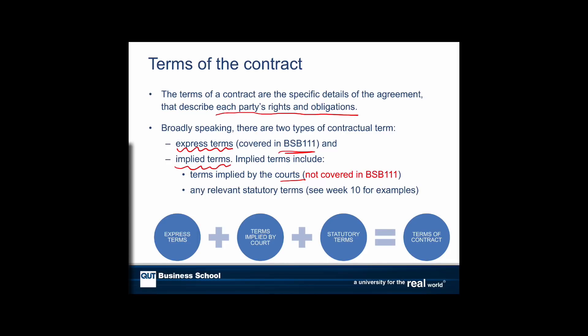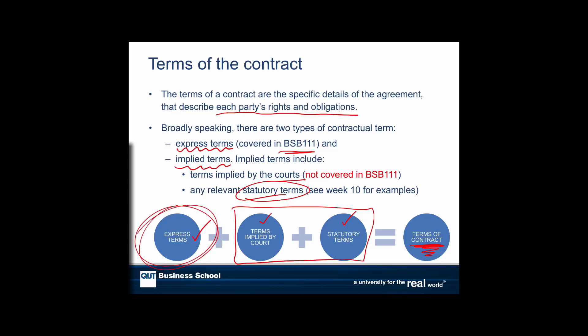Implied terms can be implied by the courts, and we don't cover that in BSB 111. What we do cover next week are some statutory terms — a statute that actually puts terms into a contract. So as we can see in this diagram, a contract's terms are made up of what's expressed, terms imposed by statute, and terms the court will imply. It's not just what's written; it can be more than that. But we're going to concentrate on expressed terms — the stuff we have more control over.